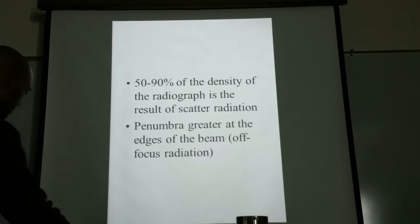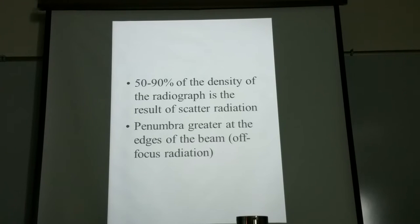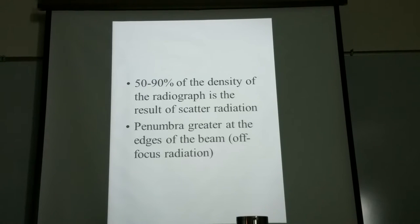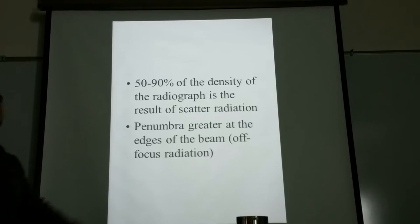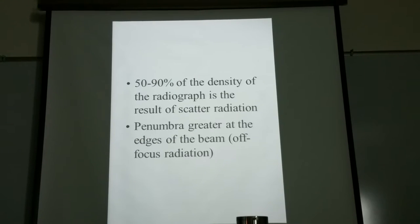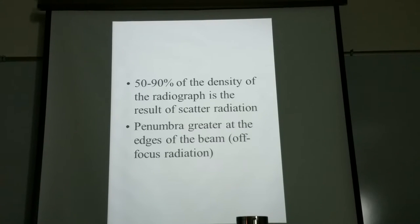Keep in mind: when primary radiation interacts with an object, scatter radiation is produced — plain and simple. Fifty to ninety percent of the density on your radiograph is a result of scattered radiation. Also keep in mind penumbra — blur — which is greater at the edges of the beam. Off the sides of the x-ray beam, on the edges, is what causes penumbra or blur on your image.